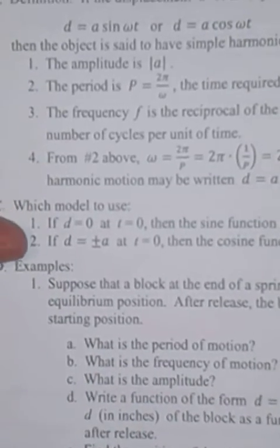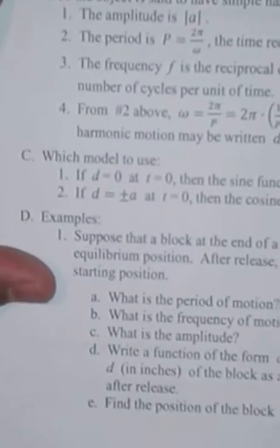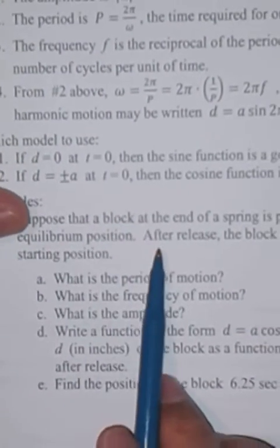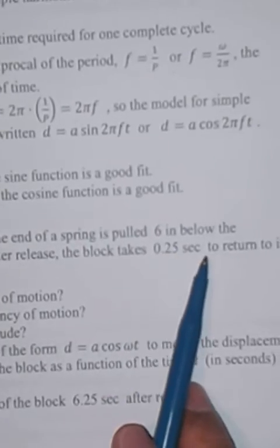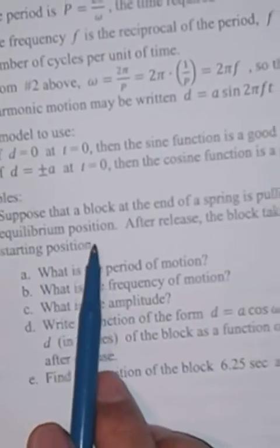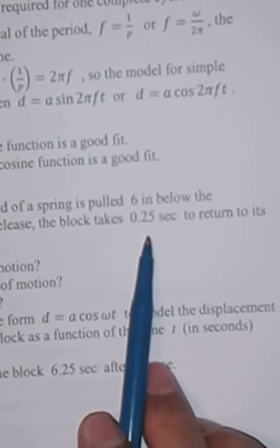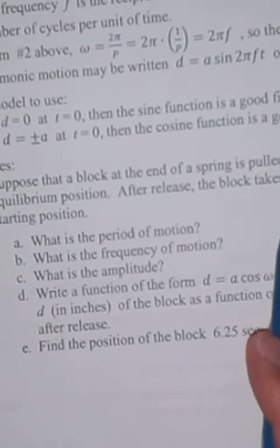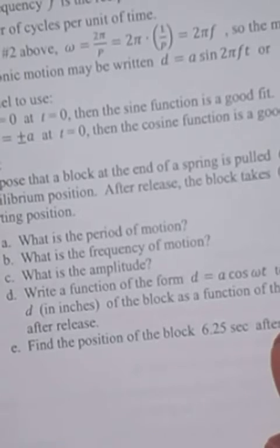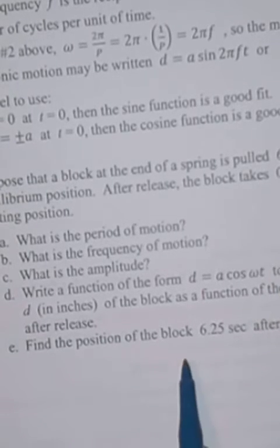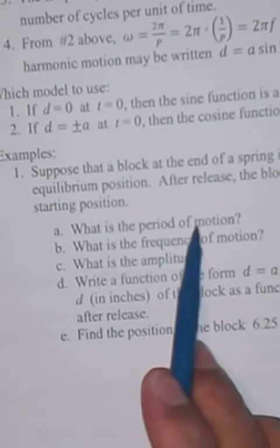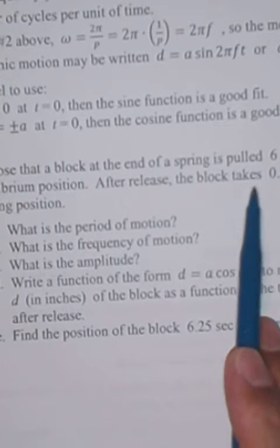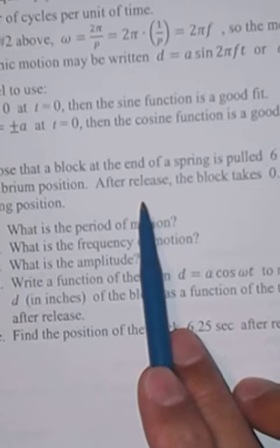Let's look at an example. And we'll start this off and then we'll finish it in class. So suppose that a block at the end of a spring is pulled six inches below the equilibrium position. After release, the block takes 0.25 seconds to return to its starting position. So that's its period. The period is 0.25 of a second. And that was the first question. What is the period of motion? Well, whatever it takes to do one complete cycle, the block takes to return to its starting position.